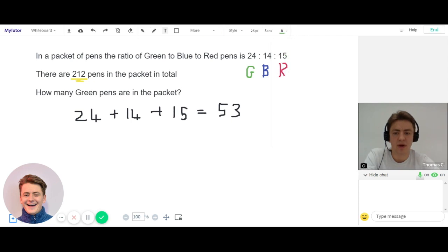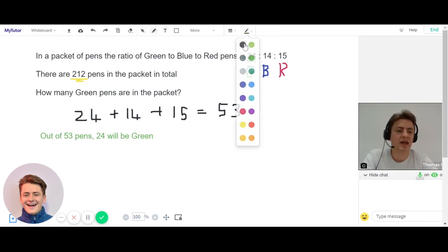We could summarize this by saying out of 53 pens, 24 will be green. That's a pretty good thing to know and is a major step towards getting the answer. But in this case, we don't have 53 pens—we have 212 pens.